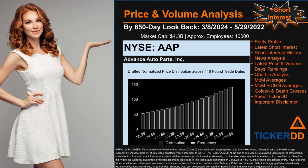Now that we have made our lawyers happy, capitalist brothers and sisters, let's get started. AAP went public on November 29, 2001, which was roughly 22 years and four months ago. Looking back 650 calendar days from Friday March 8, 2024, to Sunday May 29, 2022, we found 446 applicable trade dates for use in our analysis of this ticker, which has a market capitalization of about 4.3 billion.